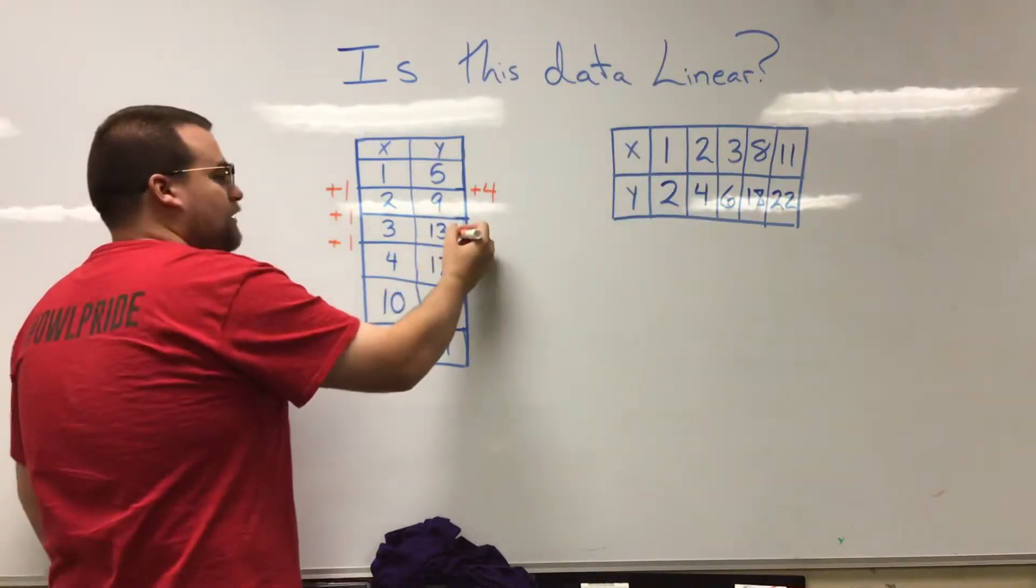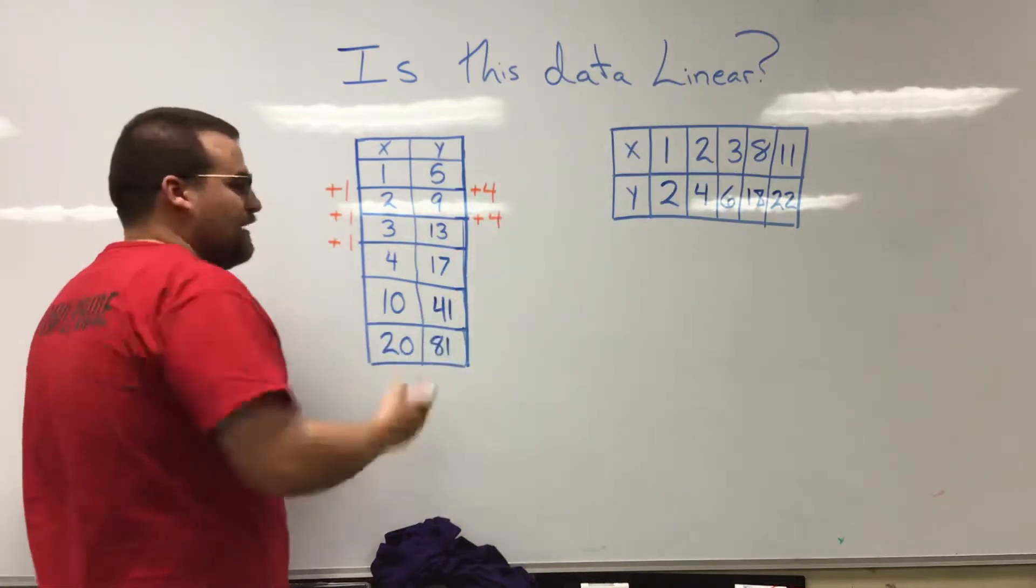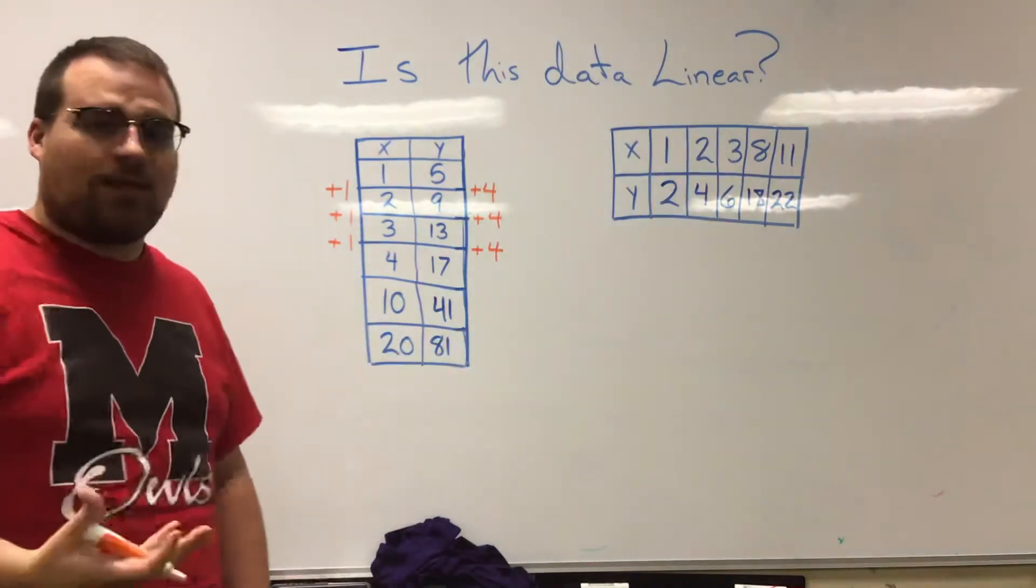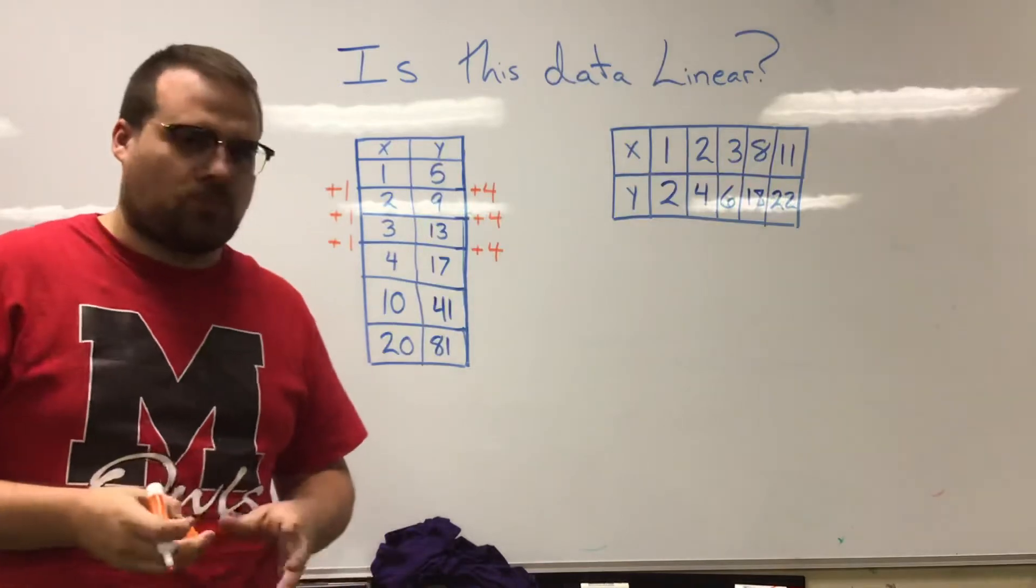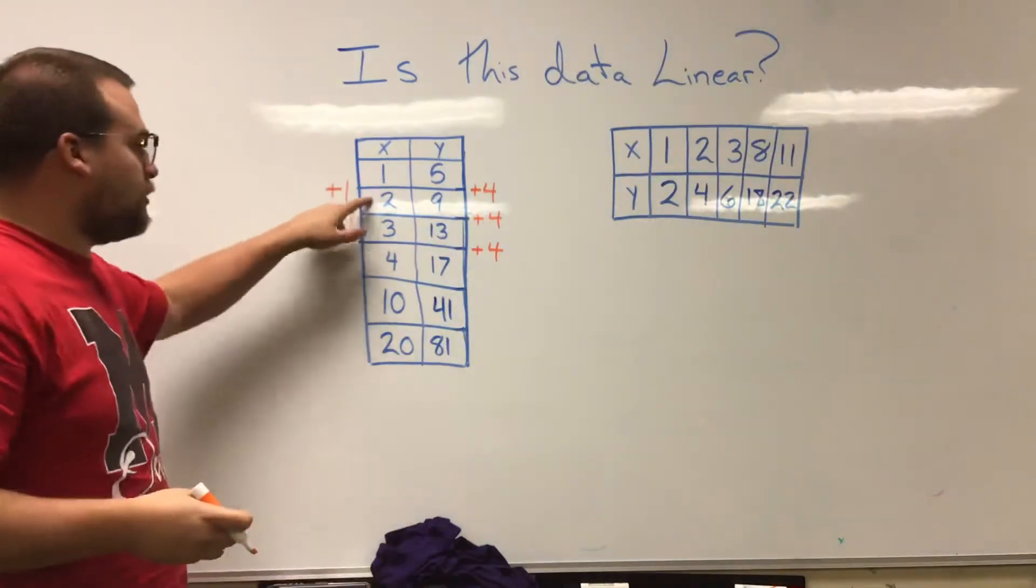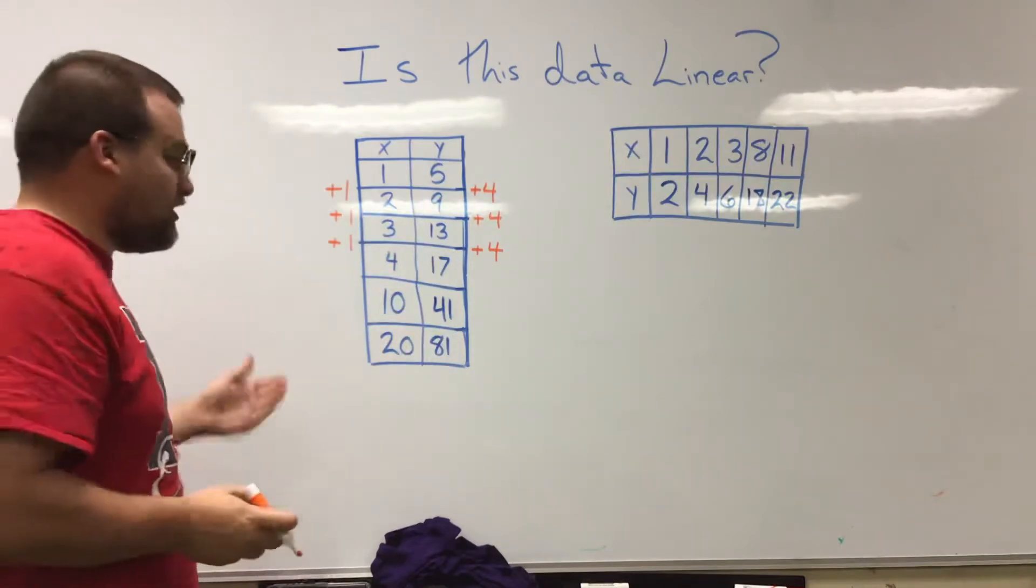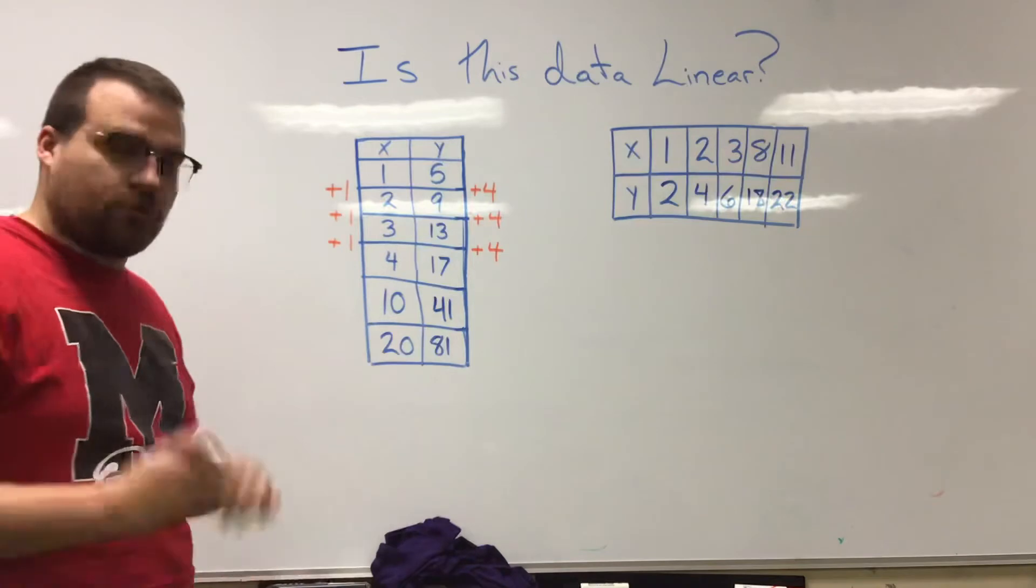Well, between nine and thirteen there's four difference there so that worked and went up by four, and then between thirteen and seventeen, guess what, again it went up by four as well. So I've established a constant rate of change at this point. Every time my X goes up by one, my Y goes up by four. I should still see that constant rate of change even in some of these larger input values.